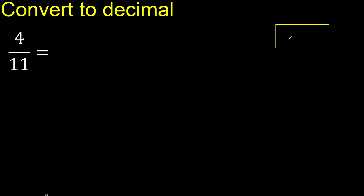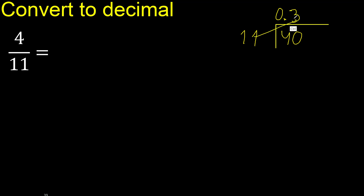4 divided by 11. 4 is less, therefore bring down a 0 — complete 40. 40 is not less, so 11 multiplied by which number is nearest to 40 but not greater? 11 multiplied by 4 is 44, which is greater. Multiply by 3: 33. 33 is not greater than 40.